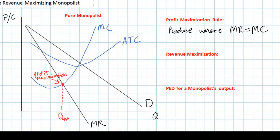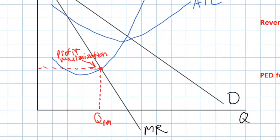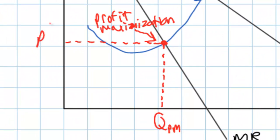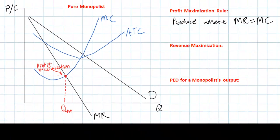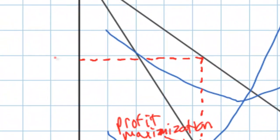How do we illustrate the area of economic profits earned by a monopolist at this quantity? A common student mistake is to draw a dotted line from the MR=MC intersection and indicate that this is the price the firm will charge. This is incorrect — that dotted line indicates the firm's marginal cost and marginal revenue at QPM. To find the price we must go all the way up to the demand curve, because demand represents the willingness and ability of consumers to pay. The price the monopolist charges is determined by the level of demand for that quantity.